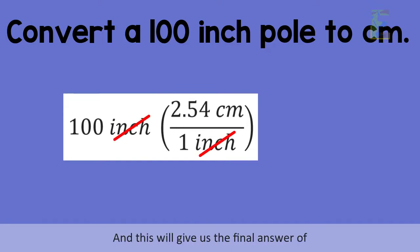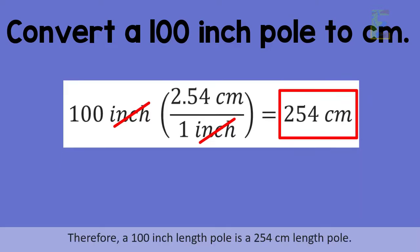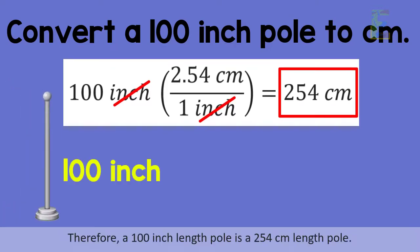And this will give us a final answer of 254 centimeters. Therefore a 100 inch length pole is a 254 centimeters length pole.